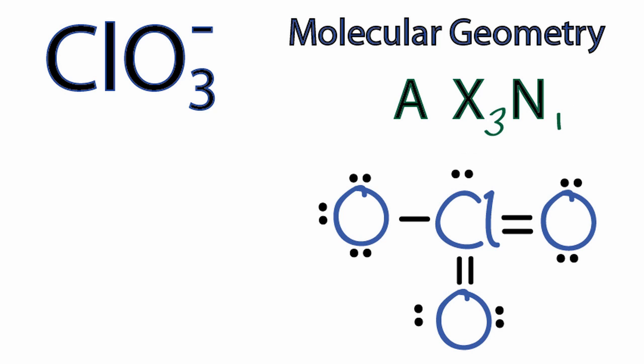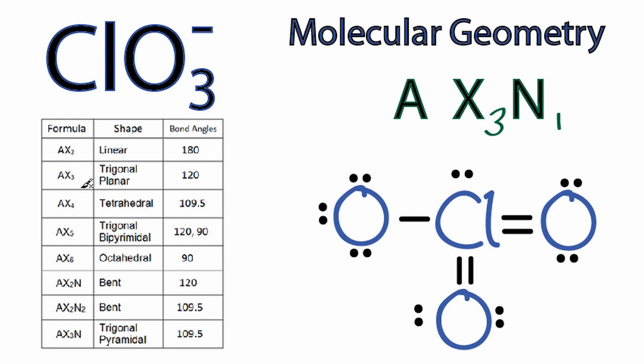So we have AX3N, and we can look that up, and we can see going down our table here at the bottom, there's AX3N, and it's a trigonal pyramidal molecular geometry, and the bond angles are 109.5.